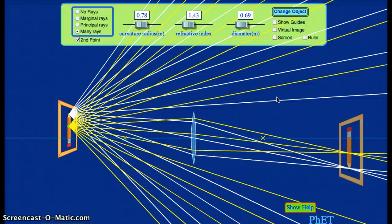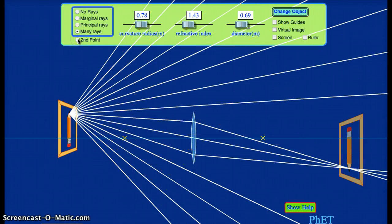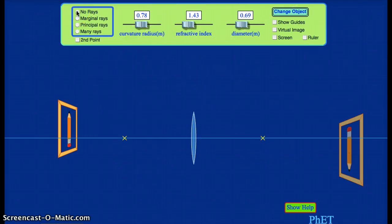In the next video, this looks pretty complicated. In the next video, we'll talk about how we can figure out, given where our object is, how we can figure out where the image is, how we can draw this picture without having to use all of those rays, with focusing on just a few special rays. That's what we'll do in the next video.